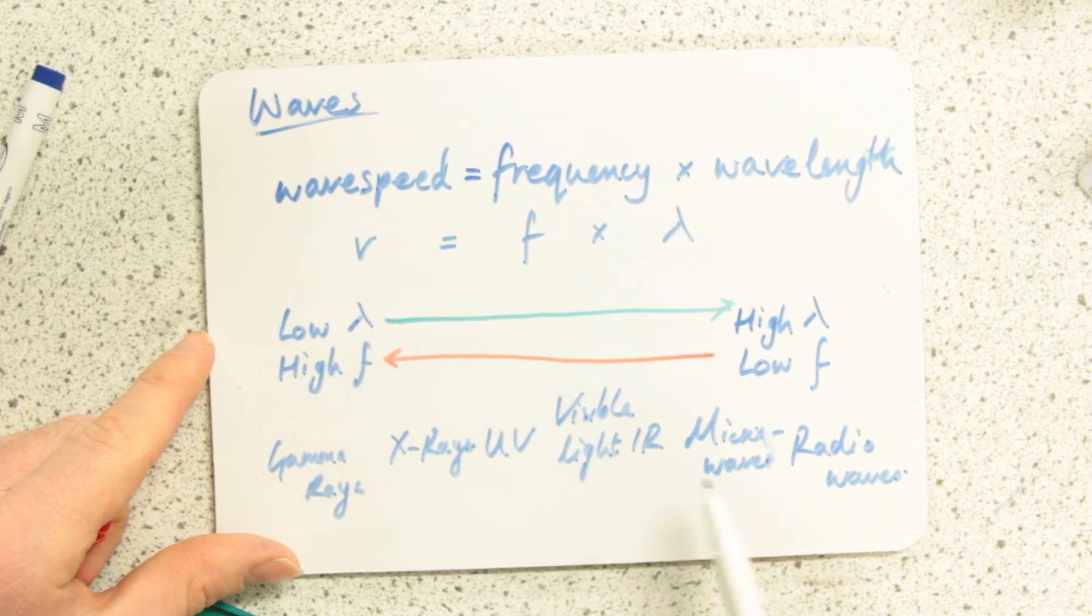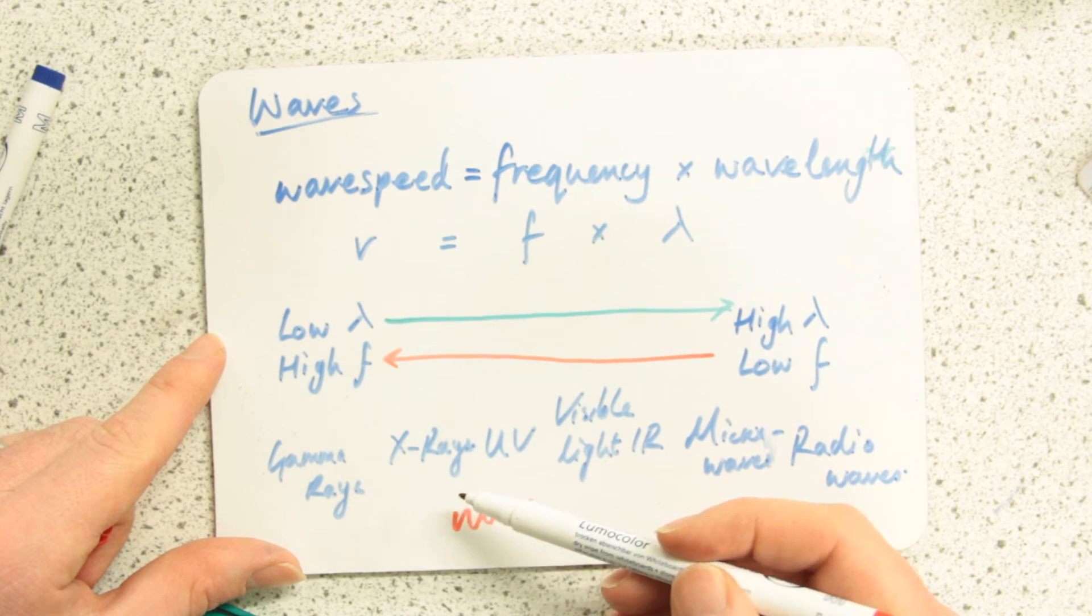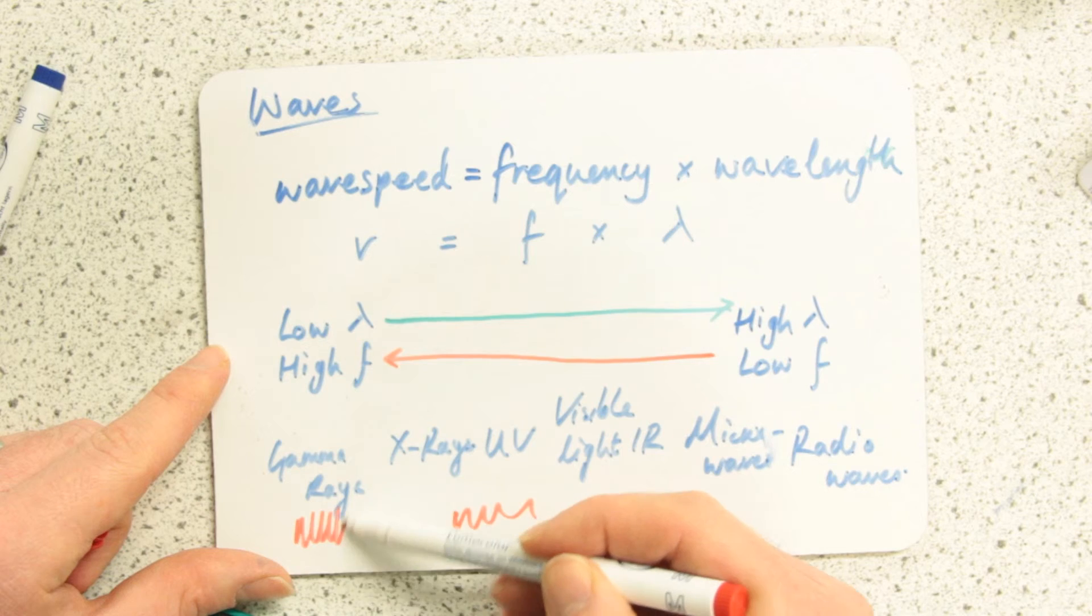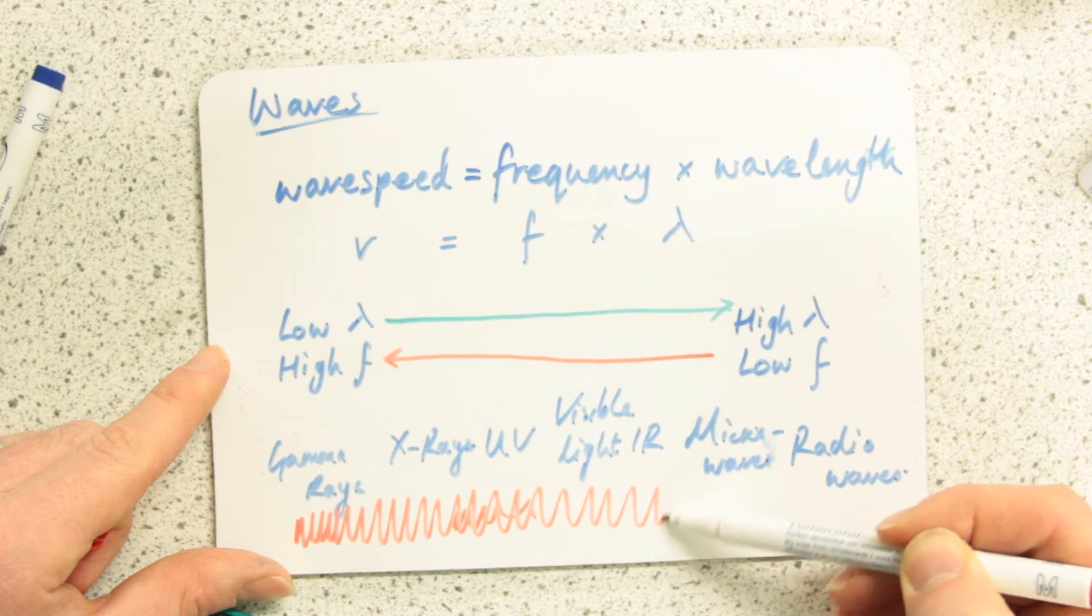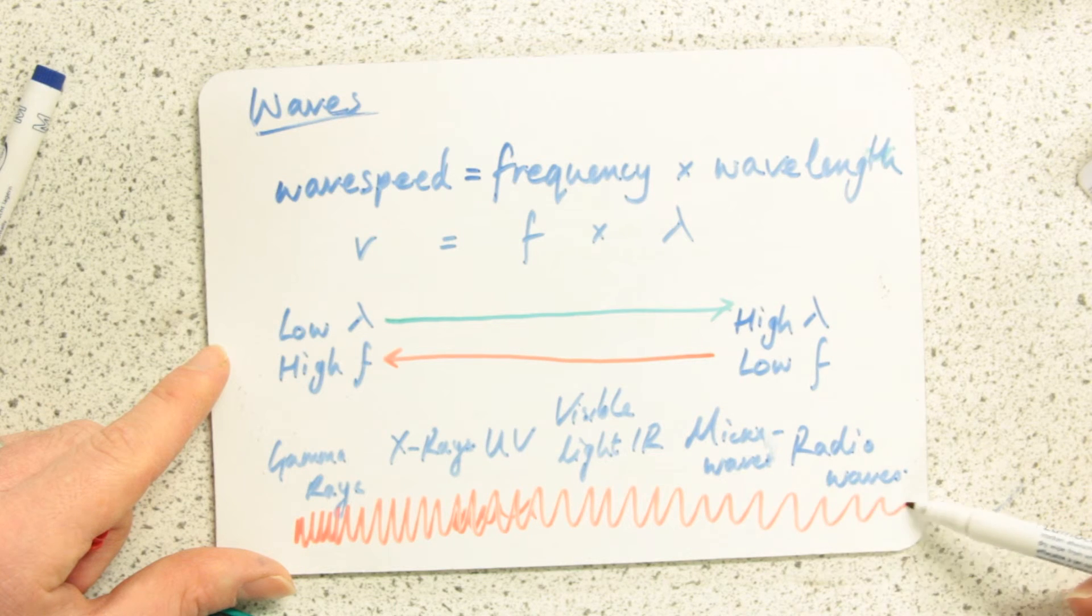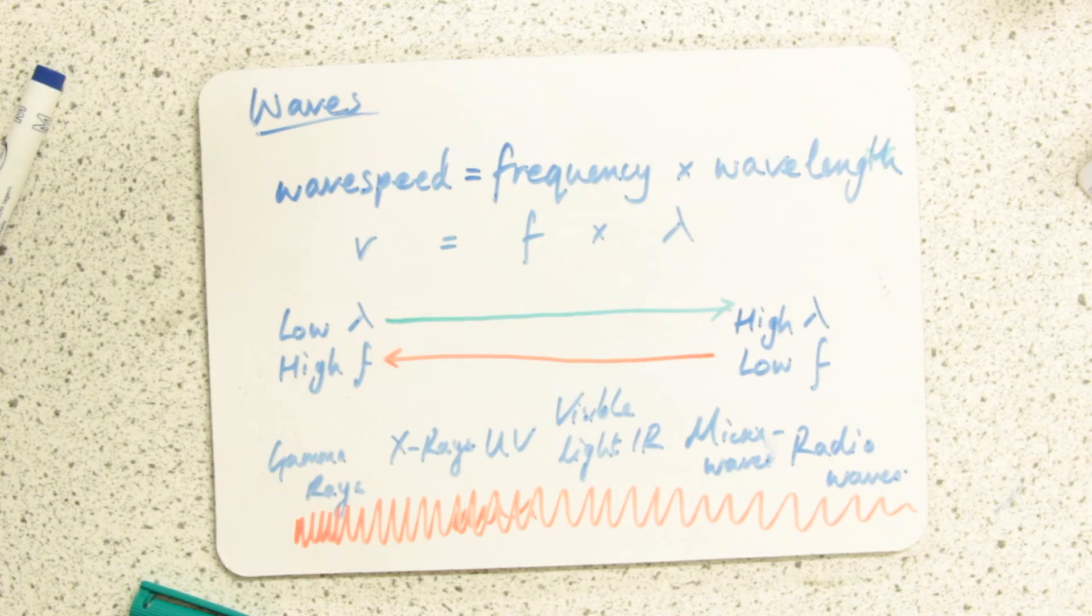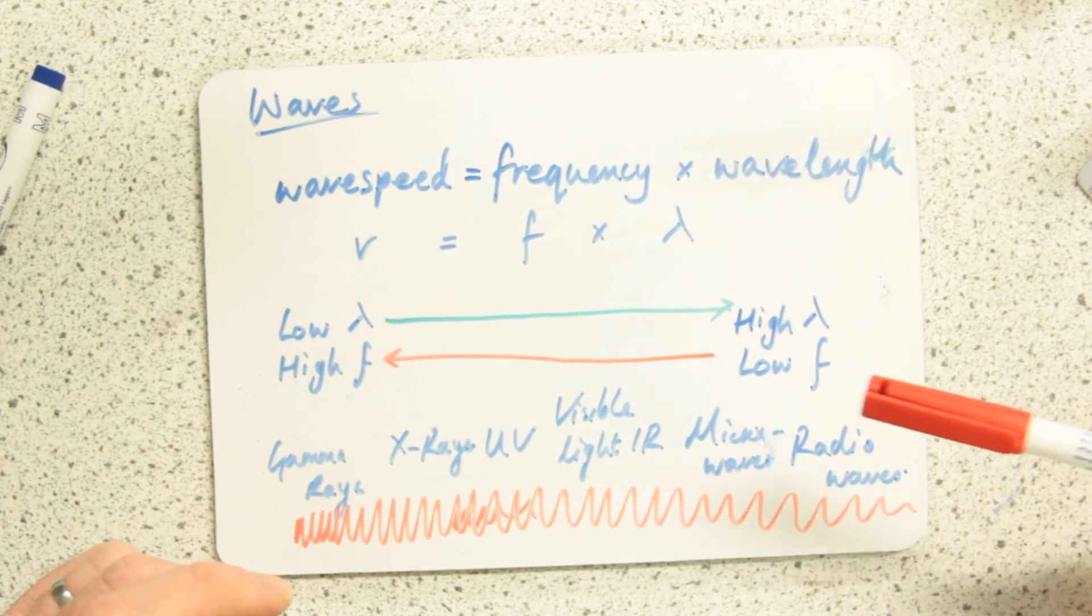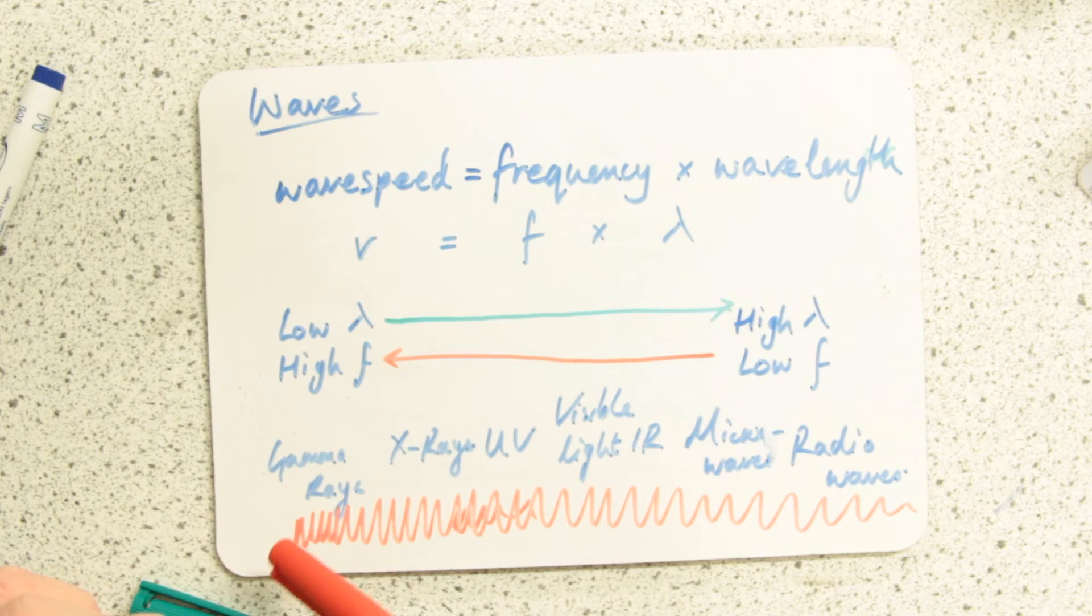Microwaves and x-rays are the same thing—they're all electromagnetic radiation. But x-rays has a very high frequency, whereas microwaves and radio waves have a much lower frequency. Radio waves has a high wavelength, whereas gamma rays and x-rays at this end have a very low wavelength, very short wavelength.